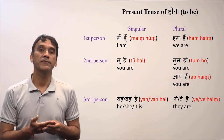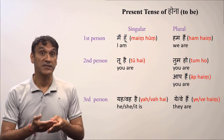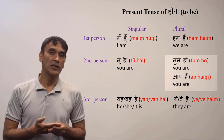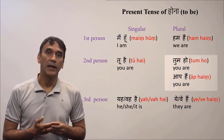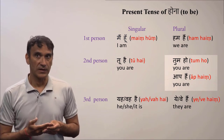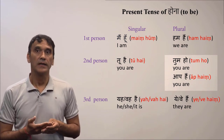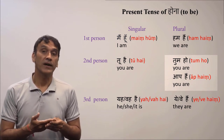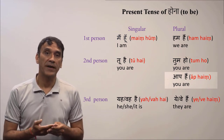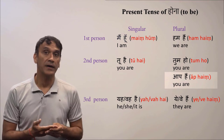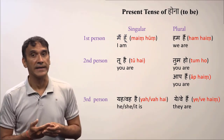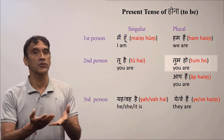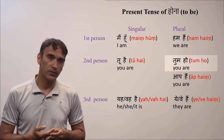There are two different forms for second person plural: TUM HO and AAP HAIN. Both can also be used for a single person. Students are advised to use AAP HAIN all the time unless you are very close to someone, in which case you can use TUM HO.